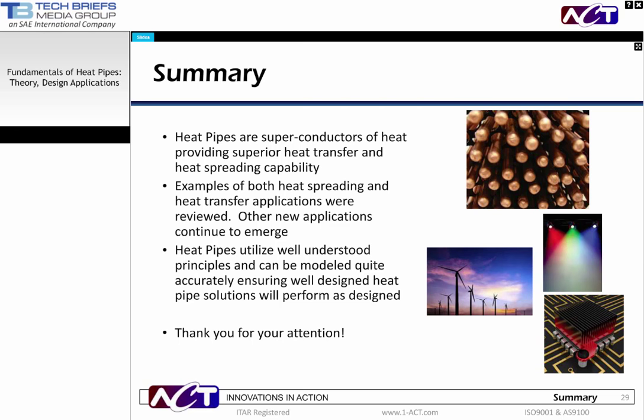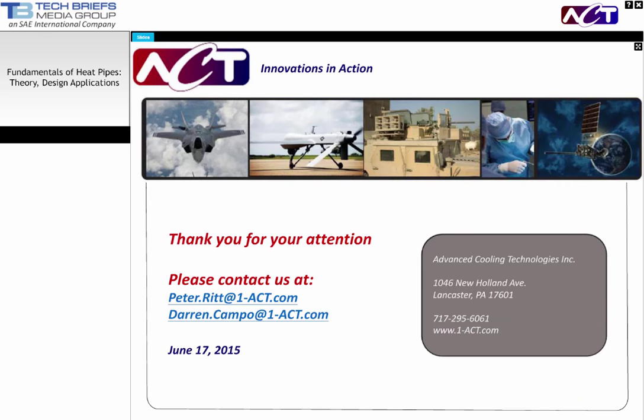We then reviewed heat pipe performance limits and discussed that the capillary limit is usually the most important. We then modeled an application using a heat pipe — first within a thermal resistance network and then in a High-K application. With the growing need for advanced thermal management solutions, heat pipes will likely be needed in more applications. We hope this webinar provided some guidance as to when and how they can be beneficially employed. Thank you for your attention and we'll now take some of your questions.